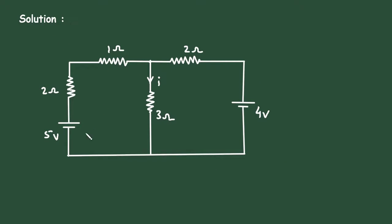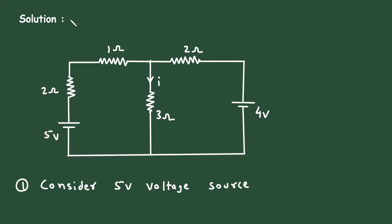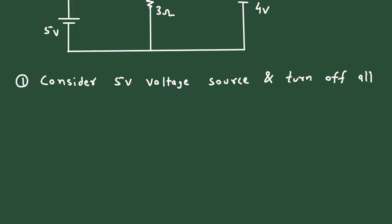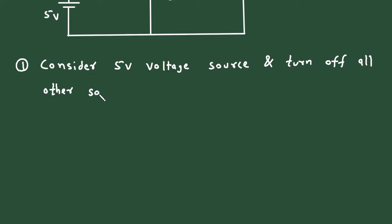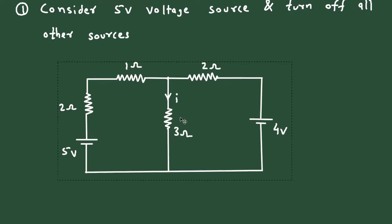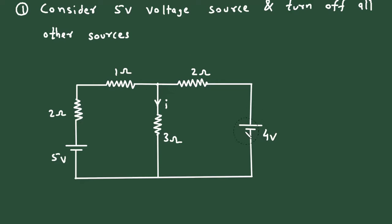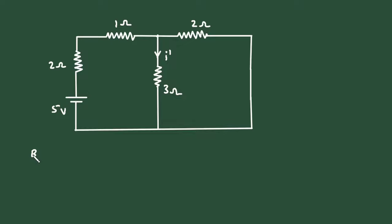First of all, let's consider this 5V voltage source and turn off all other sources. Step number 1 is to consider the 5V voltage source and turn off all other sources. Now, here in this circuit, when we turn off this voltage source, it will be a short circuit and this current will be I'. We can find I' by using the current division rule.